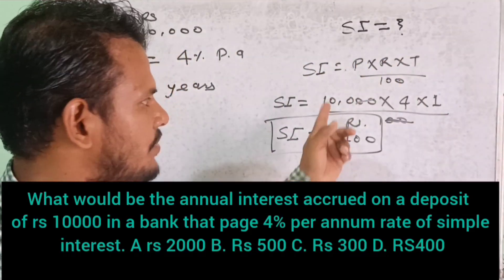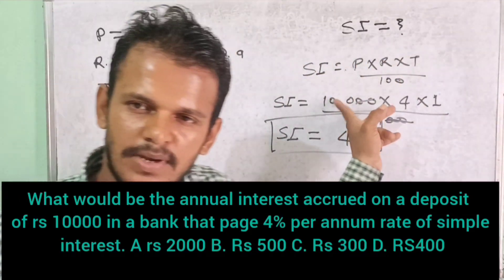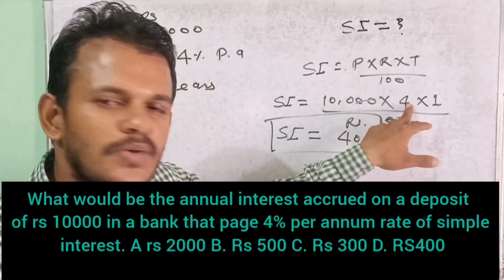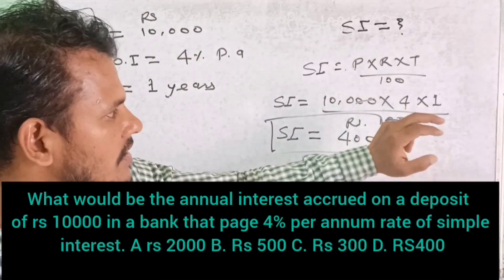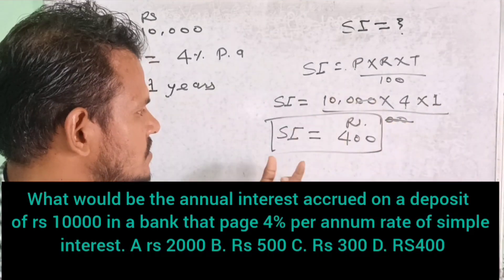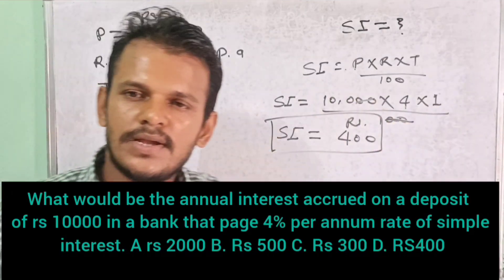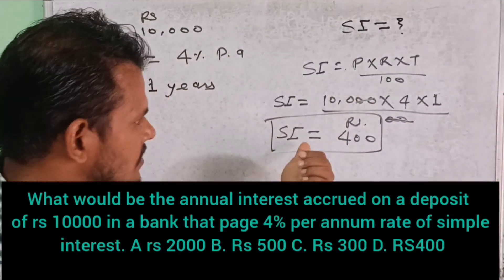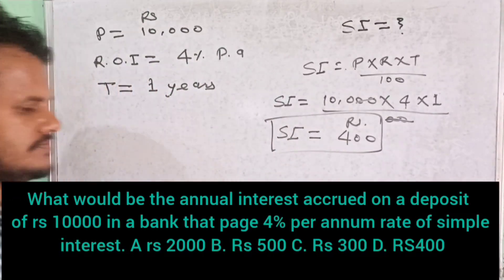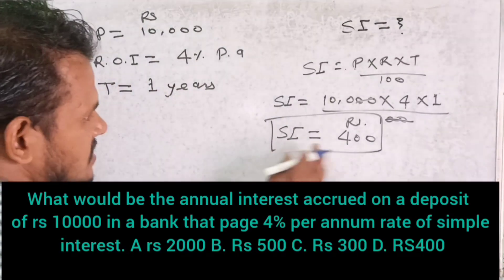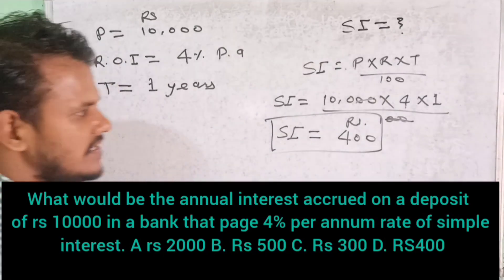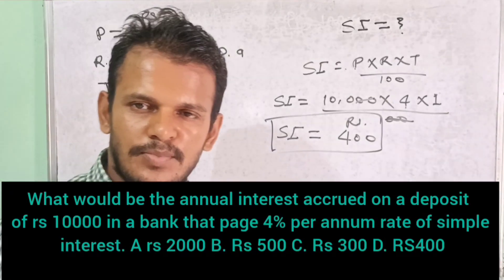PRT by 100. P is principal — 10,000. The rate of interest is 4% and the time is 1, divided by 100. After calculation we find simple interest is equal to 400. So the answer is Rs. 400. Move to the next question.